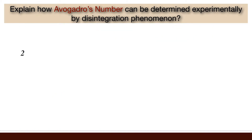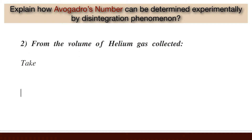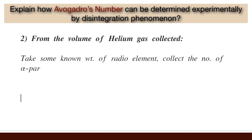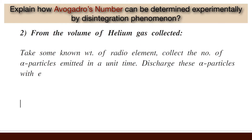Second, from the volume of helium gas collected. Take some known weight of radio element and collect the number of alpha particles emitted in a unit time. Discharge these alpha particles with electrons to form helium gas.